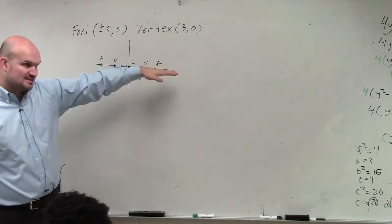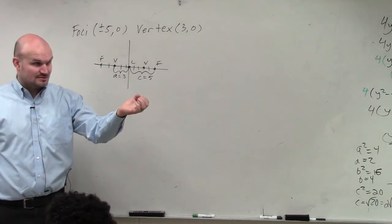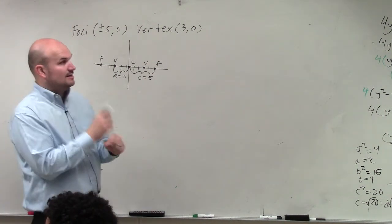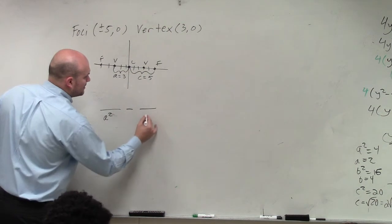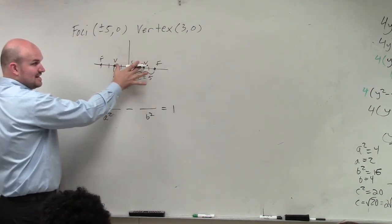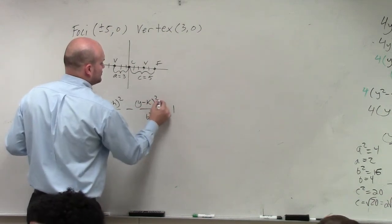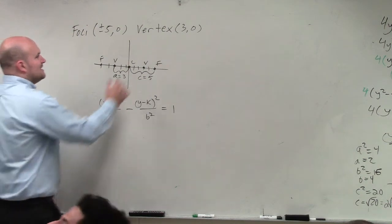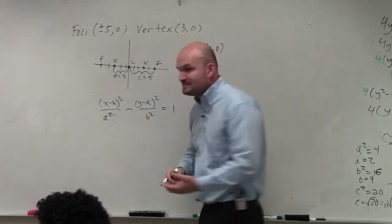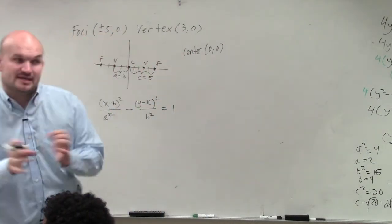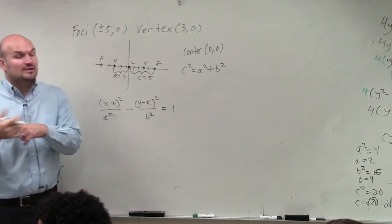Now, we notice that my transverse axis is horizontal. That means my A squared needs to be under my x. Remember the difference between an equation for a hyperbola and an ellipse — a hyperbola is always A squared minus B squared. Since I have a horizontal transverse axis, my x is over my A, so it's (x minus h) squared over A squared, minus (y minus k) squared over B squared, equals 1.